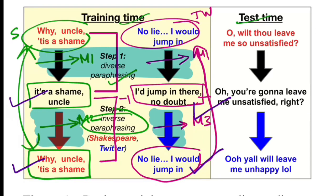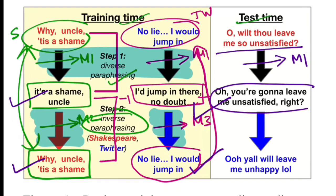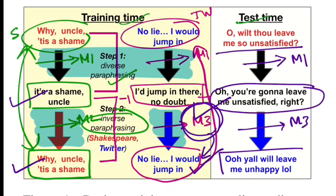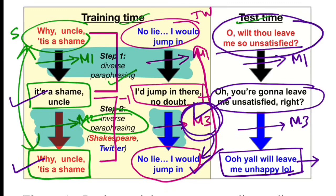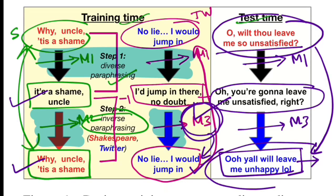During test time, to change a Shakespeare-style sentence to something you'd post on Twitter: pass it through M1 to get the normalized paraphrase, then plug in the blue model M3 — trained against Twitter-style sentences — and you get an output sentence holding the nuances of how people write on Twitter. This creates a full pipeline: given a Shakespeare sentence, the output is a Twitter version of it.